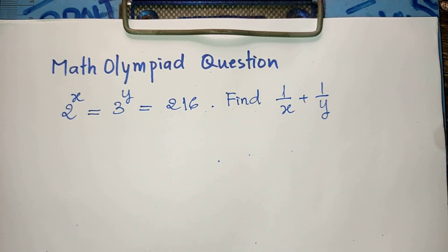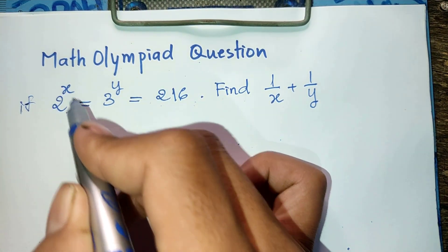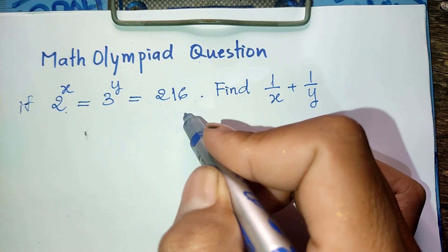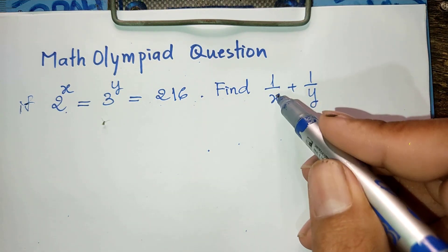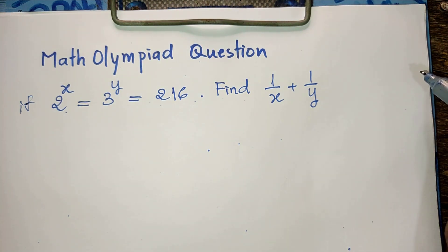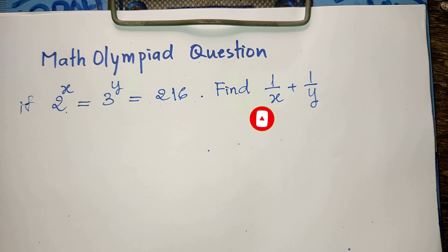Hello everyone, welcome to my YouTube channel. Today I have one exercise: if 3 power 8 equals 3 power y equals 216, find the values of 1 divided by 8 plus 1 divided by y. Do you know how to solve this? Please watch my video from beginning to end to verify your solution, and before we go to the solution, please don't forget to subscribe to my channel for more exciting videos.